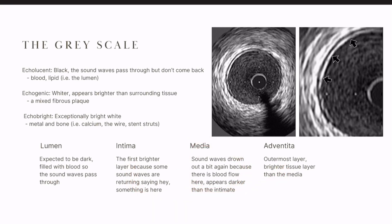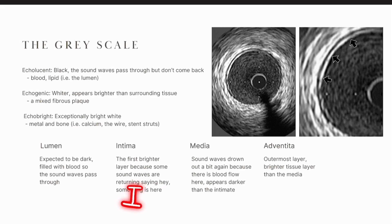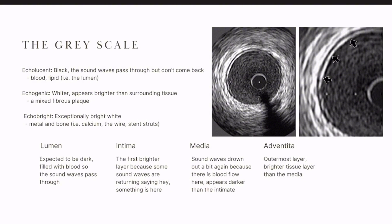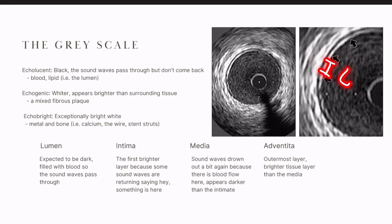The only way to know whether something is the intima or the adventitia is that you understand vessel layer order. The intima is the innermost, the media is the middle, and the adventitia is the outermost. So from the perspective of the transducer, I see the lumen, then intima, media, and adventitia — or 'LIMA' if that's helpful for remembering the order.